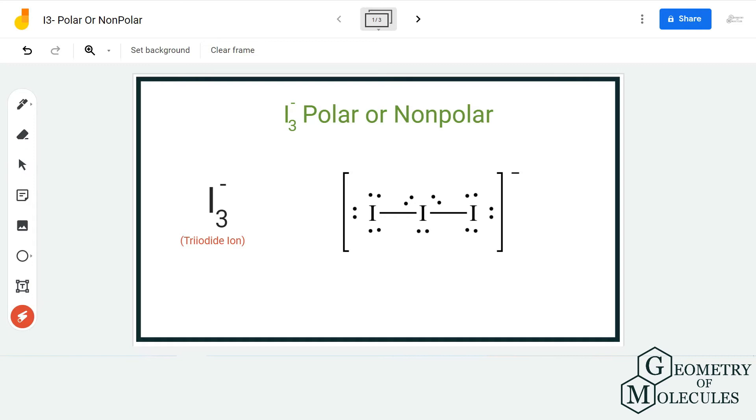Hi guys, welcome back to our channel. In today's video we are going to help you determine if I3 minus ion is a polar or non-polar ion. To determine its polarity, we first need to look at its Lewis structure.